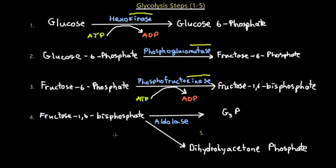Step four: fructose 1,6-bisphosphate undergoes a split reaction, breaking into G3P and dihydroxyacetone phosphate (DHAP). This is a hydrolysis reaction catalyzed by the enzyme aldolase, which splits fructose 1,6-bisphosphate into one G3P molecule and one DHAP molecule. We already have one G3P, and we still need two total at the end of the five steps.